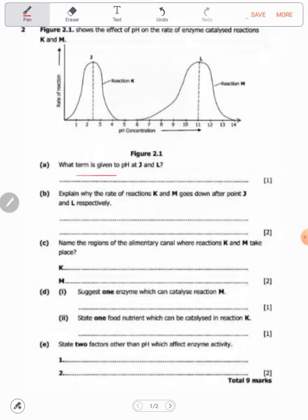So the pH at J and L is known as optimum pH. Explain why the rate of reactions K and M goes down after point J and L.